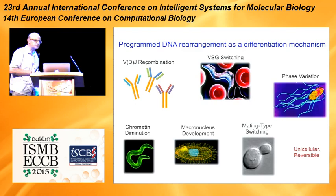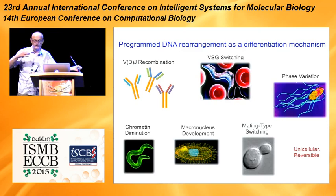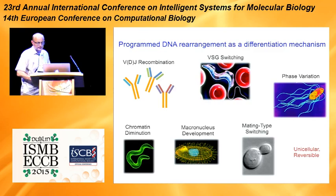The ciliate Paramecium uses a slightly different trick: it makes two nuclei, one acting as a germline permanent store nucleus that is not expressed, and a second somatic nucleus which is expressed but does not give rise to offspring.